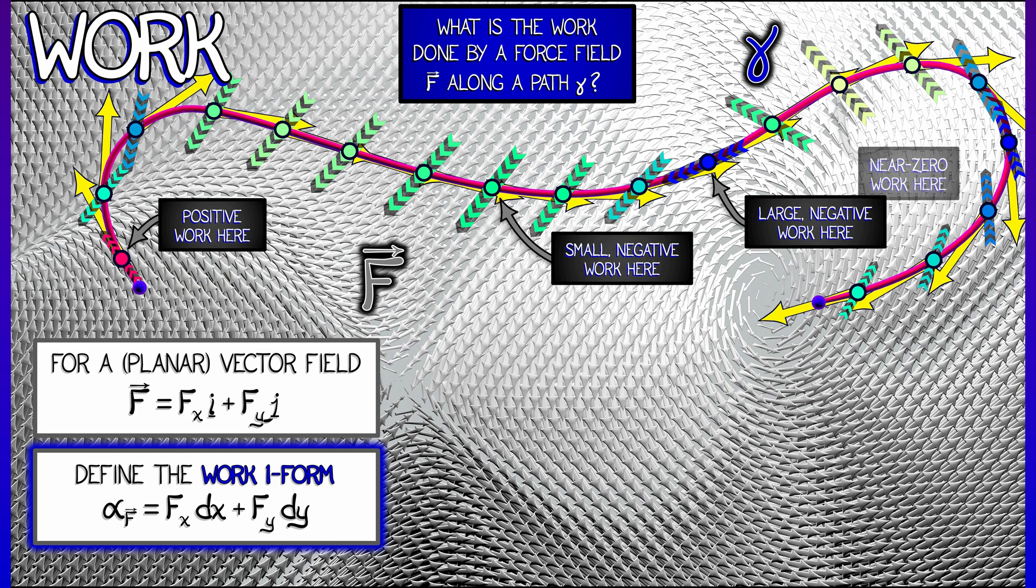So in regions where the vector field is pushing in the same direction that you're walking, that's going to contribute to work positively. Whereas if the vector field is pointed opposite to the way that you're moving, that is a negative contribution to the work done by the field. Of course, when the field is orthogonal to your direction of motion, then it's not contributing anything at all to the work.